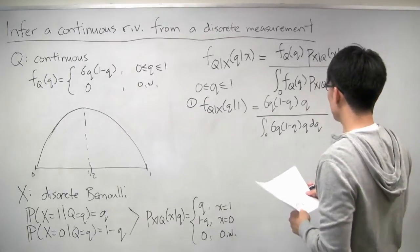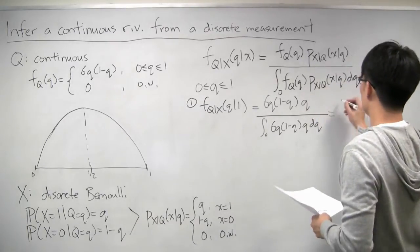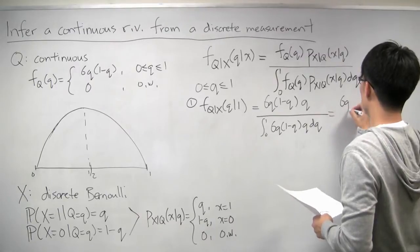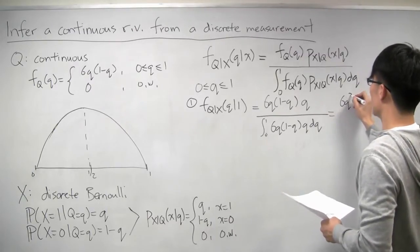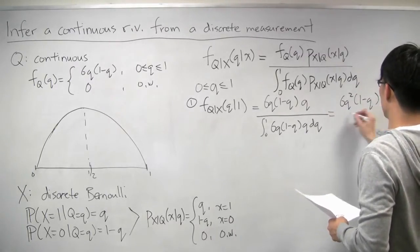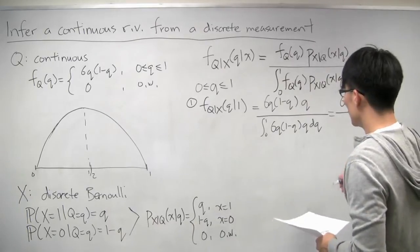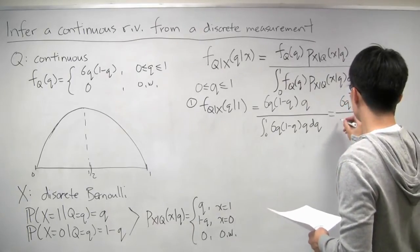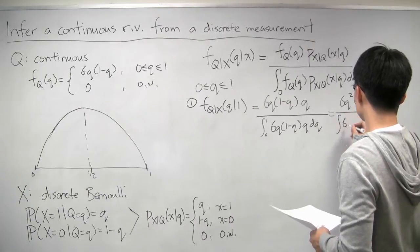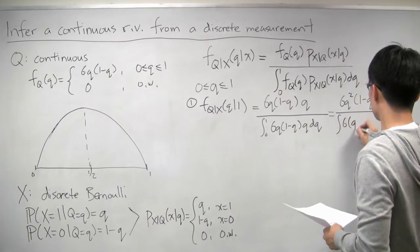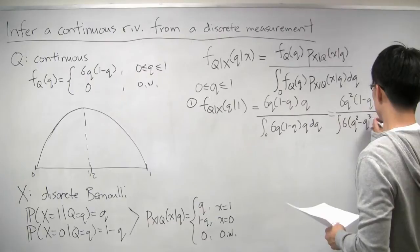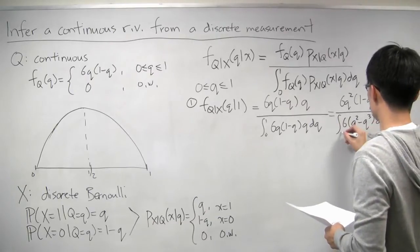And now we can simplify this. So on the numerator, we have 6q squared times 1 minus q. And then at the bottom, we have the integral of 6q squared minus q cubed dq from 0 to 1.